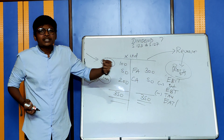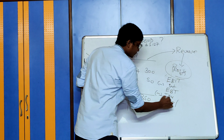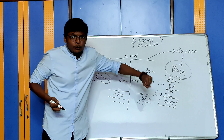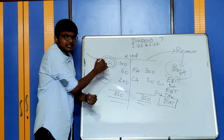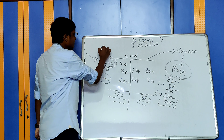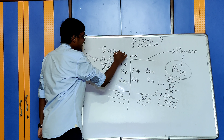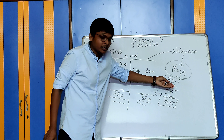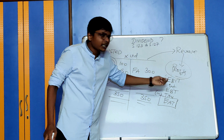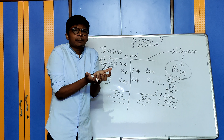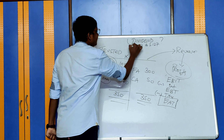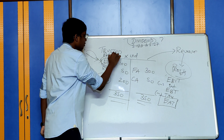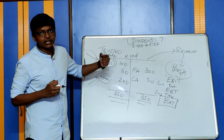Now, what do you do with this earnings after tax? The company can decide to either distribute these profits back to the shareholders. Why? Because the shareholders trusted the company and gave their money and they have the highest risk. After paying the interest, after paying the tax, if any money is left out, only then dividend will be paid to the equity shareholders, because this is like a return on the investment made by the shareholder.